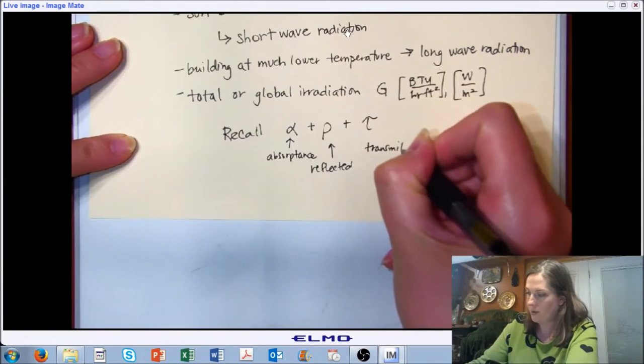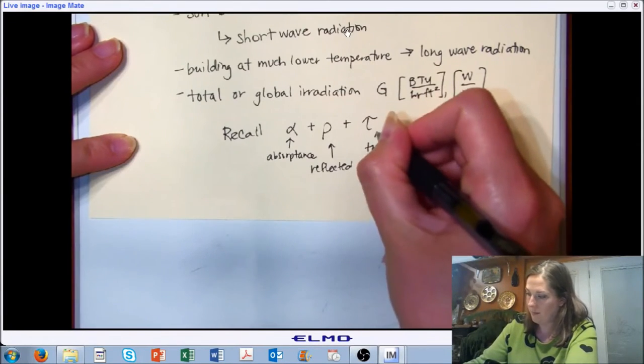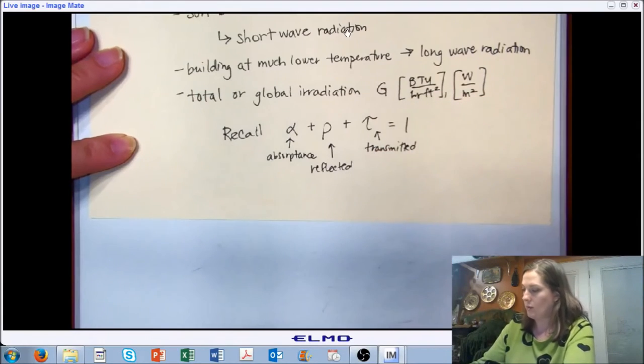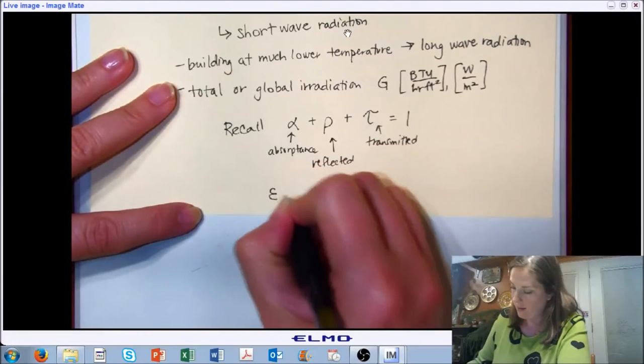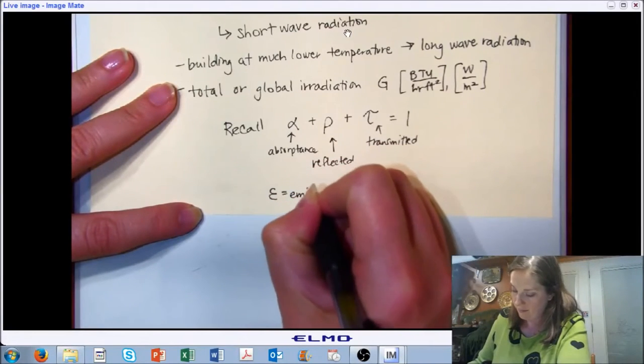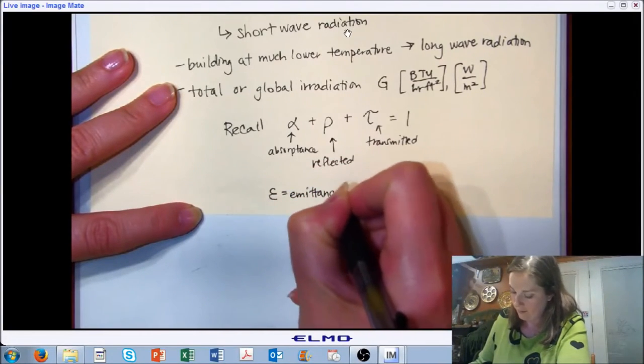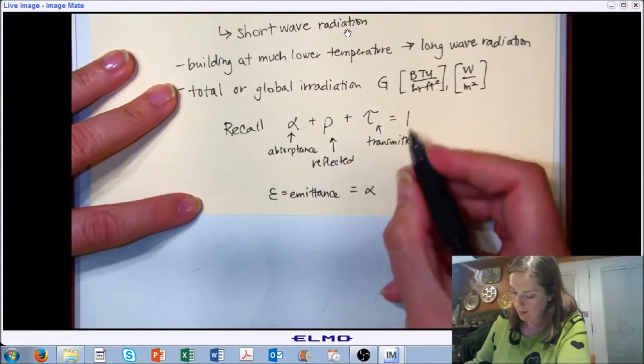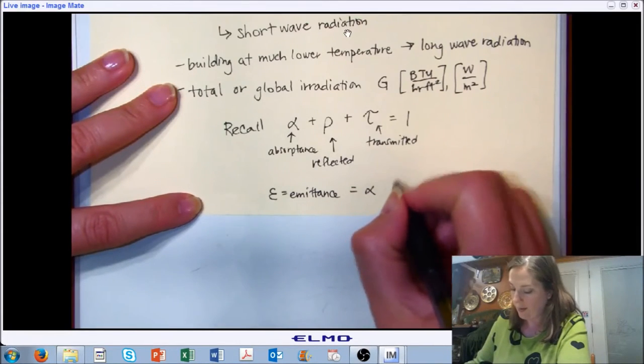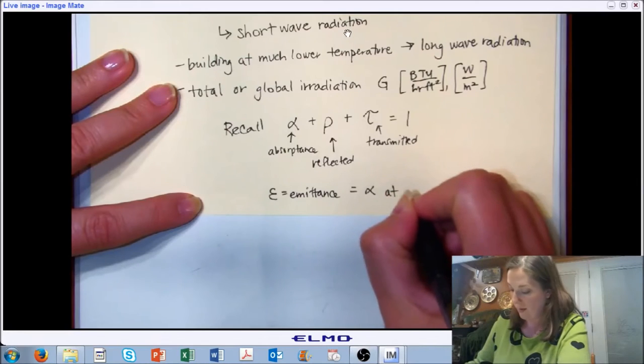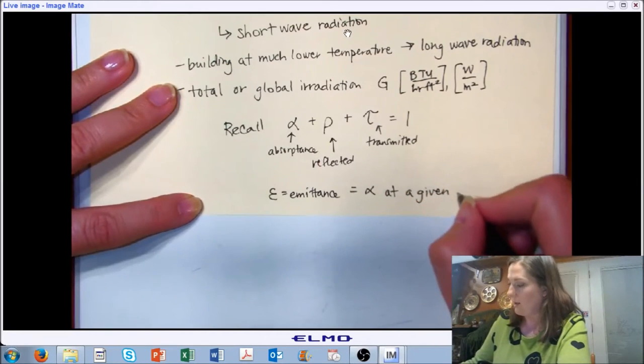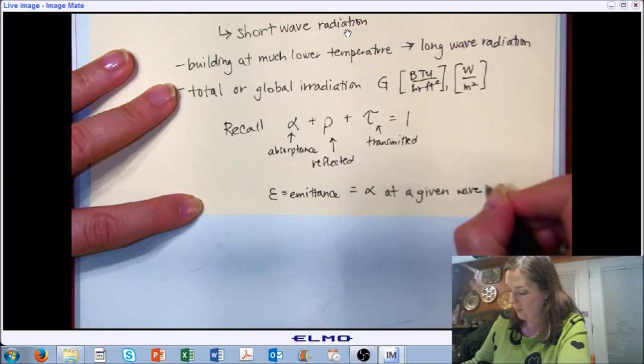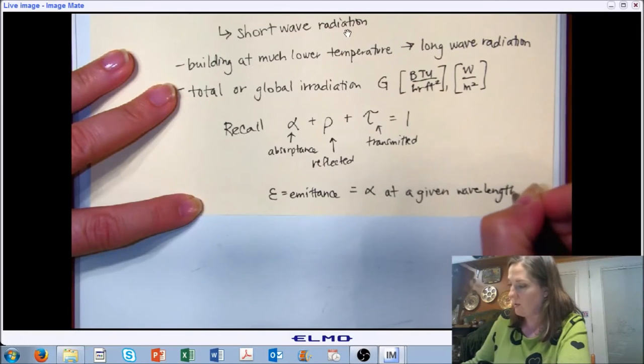Let's refresh ourselves that our absorptance plus our reflectance plus transmitted is equal to 1. And our emittance is the same as our absorptance for a specific wavelength, at a given wavelength. This is just a refresher and a little bit of extension from where we were when we talked about radiation a few chapters ago.